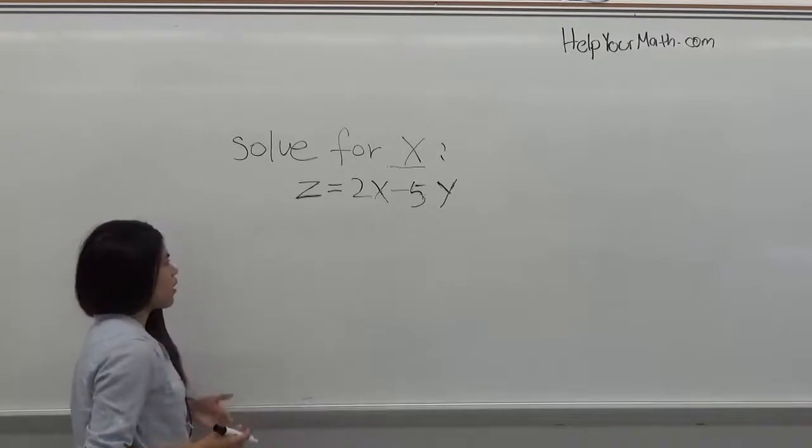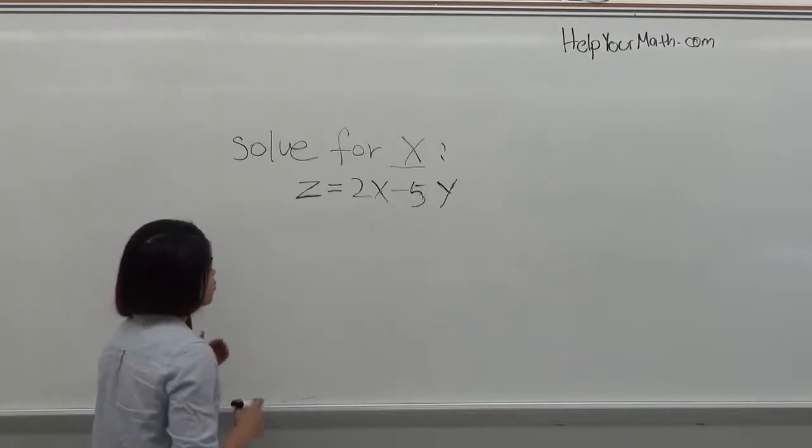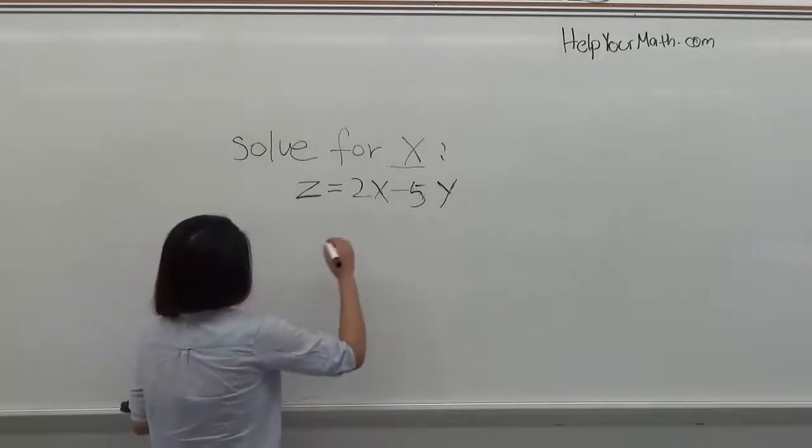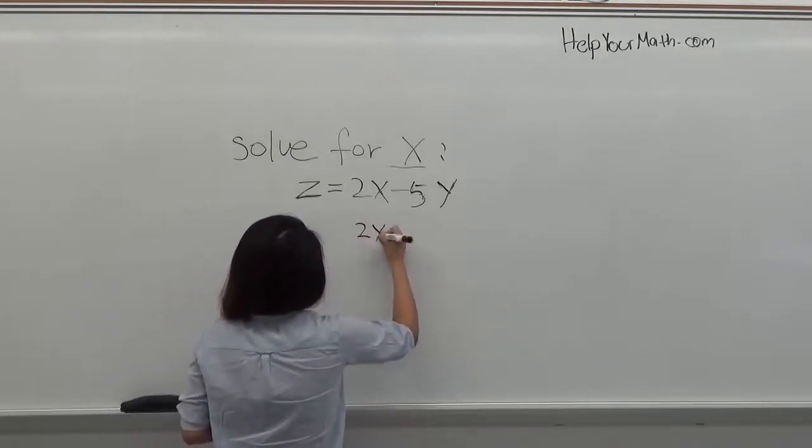In order to solve for x, you need to isolate the 2x, which means you get the 2x by itself. So you get it by itself, 2x.